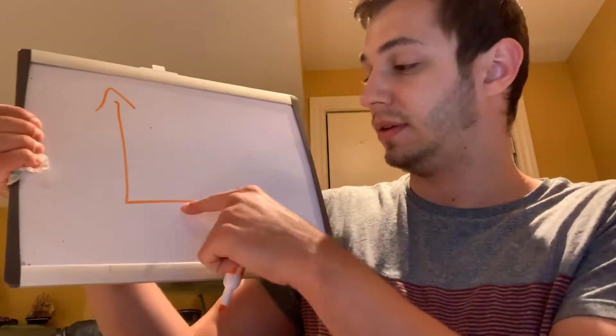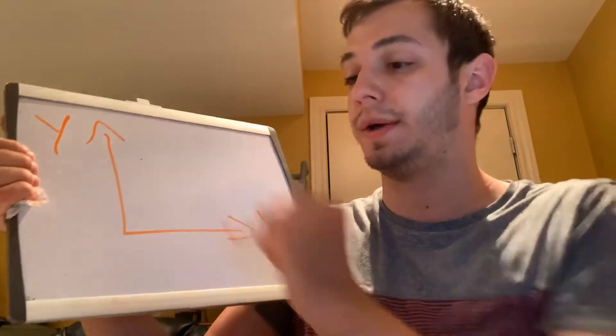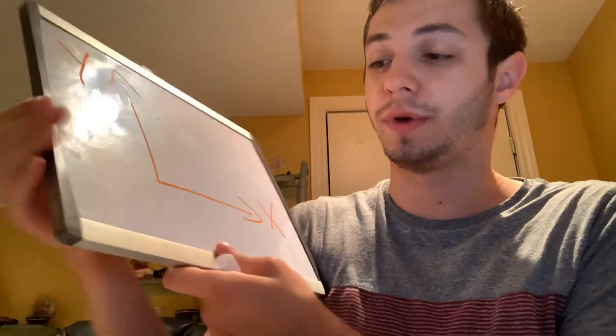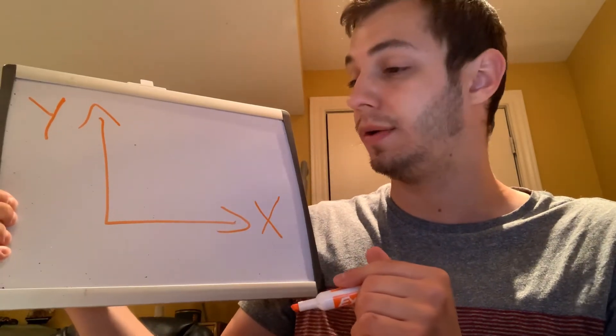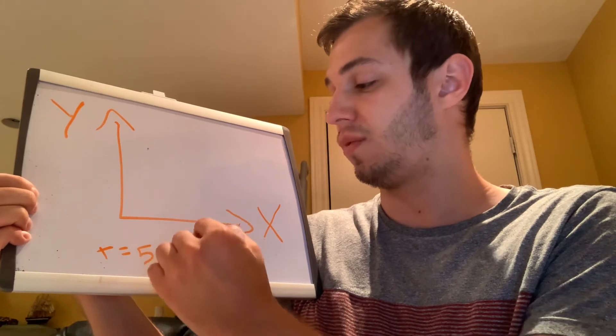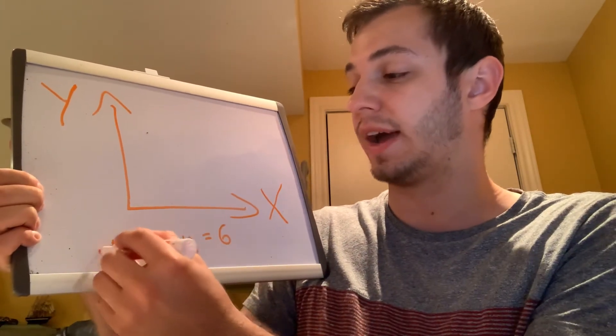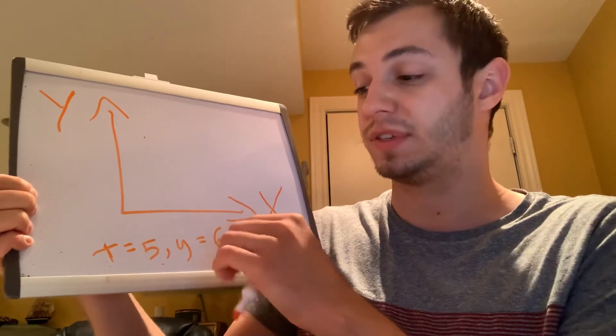Welcome back to part four. In part four we're going to be looking at our coordinate system. You're going to have to find points on the coordinate grid. Each item tells you what x equals and what y equals. The bottom axis or the bottom arrow is going to be your x, and then the arrow that goes up will be your y. When you're given a coordinate, first you're going to look at your x, and then you'll look at your y.